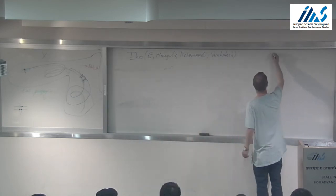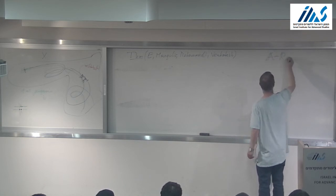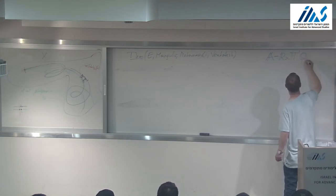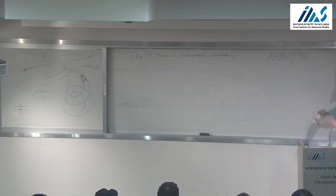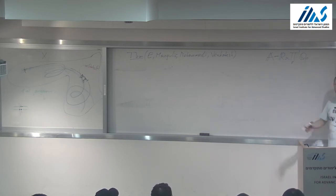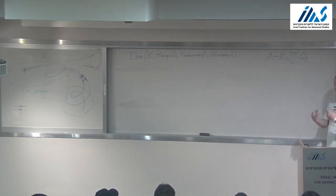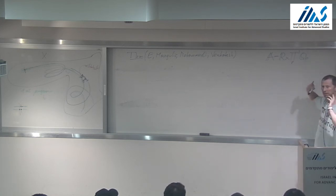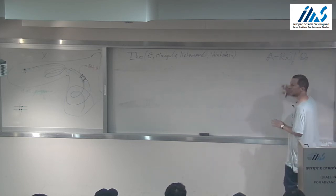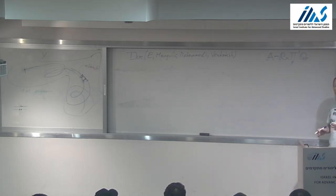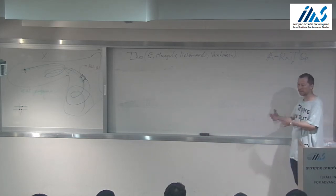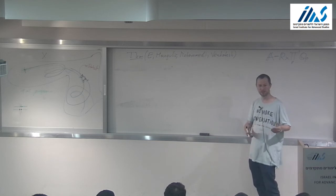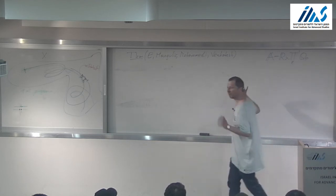A quick reminder: what are the adeles? It's R cross something like a product of the Q_p's for all primes p. You need to take a restricted product of all p-adics. That's the right thing because taking the full product gives a crazy space. You restrict the product and get a super nice ring — locally compact, metric — that contains Q as a lattice. The standard example of lattices is Z in R, but if you want Q, you need to invent this space.